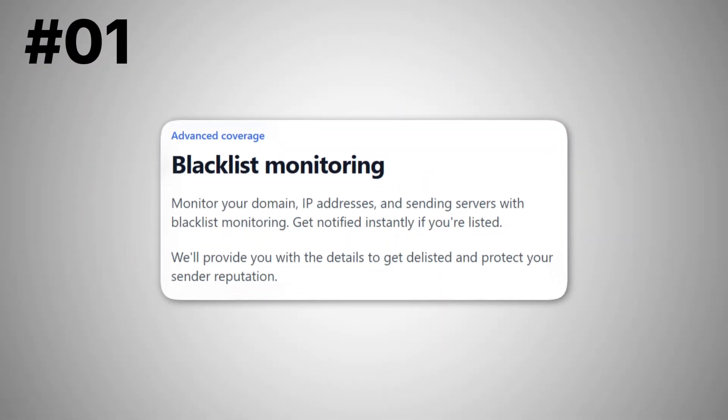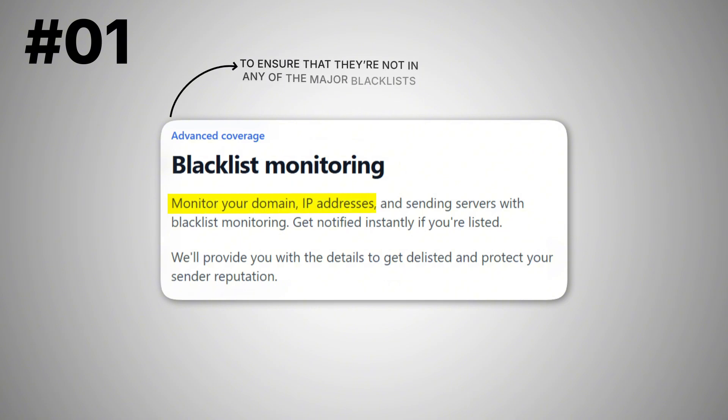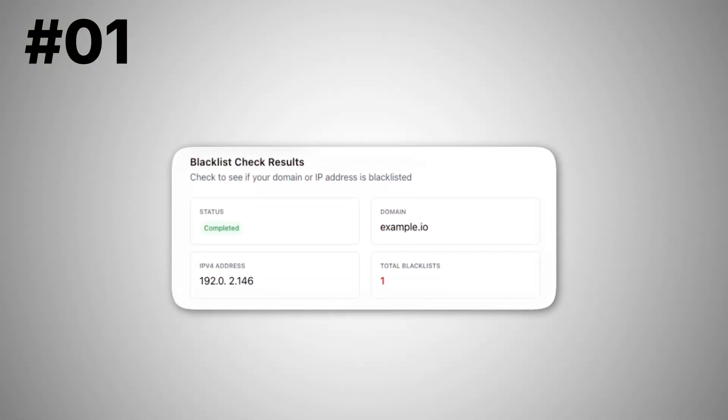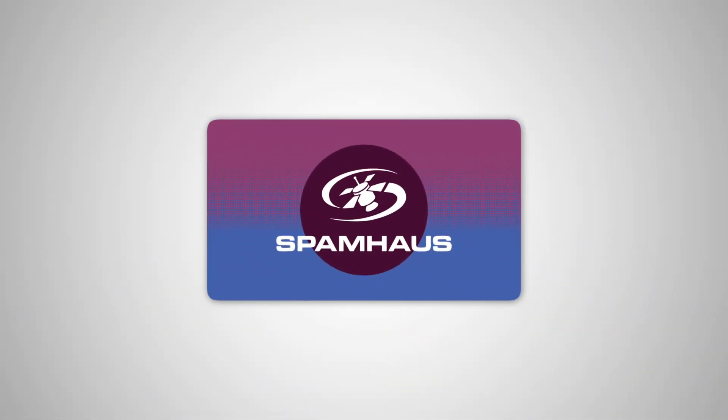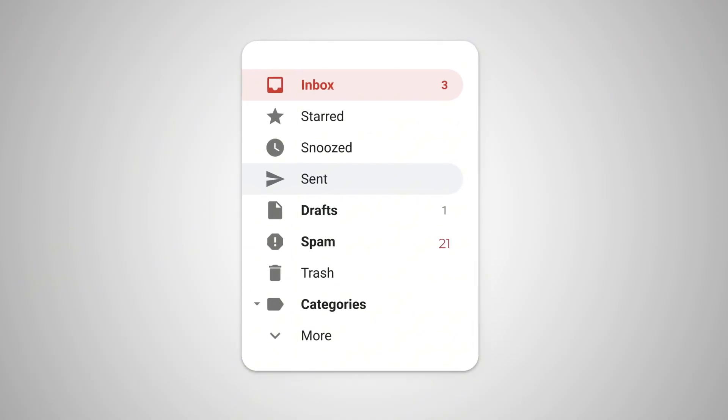First, we have blacklist monitoring. This tool monitors your domain and IP addresses to ensure they're not in any of the major blacklists. If you are, EmailGuard will notify you ASAP and help you get out of them. Blacklists are very important because all email service providers like Gmail and Outlook use them to determine whether or not your email is worthy to be delivered. For example, if you're listed in SpamHaus, one of the biggest blacklists, your email is likely to get redirected to spam every time you try to reach out to Gmail mailboxes.